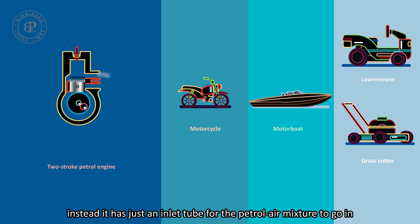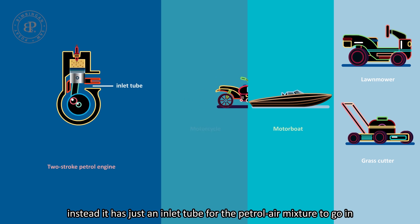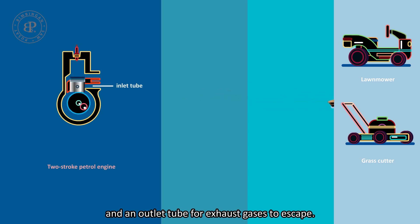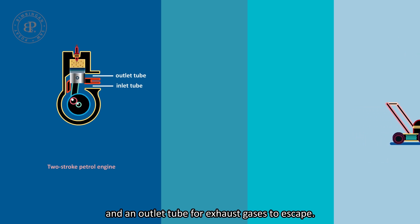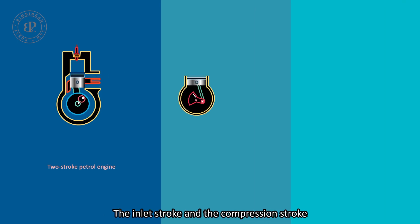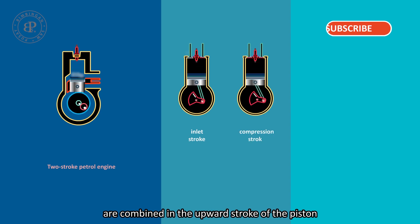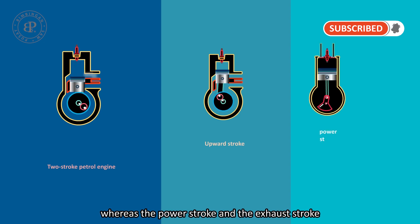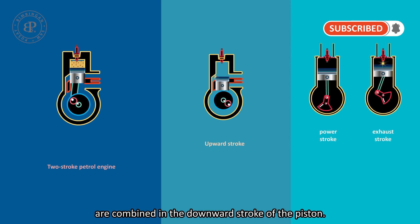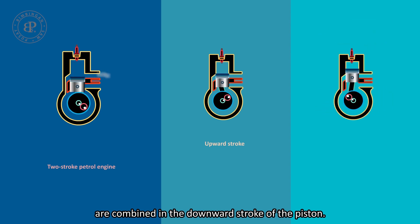Instead, it has just an inlet tube for the petrol-air mixture to go in, and an outlet tube for exhaust gases to escape. The inlet tube and the compression stroke are combined in the upward stroke of the piston, whereas the power stroke and the exhaust stroke are combined in the downward stroke of the piston.